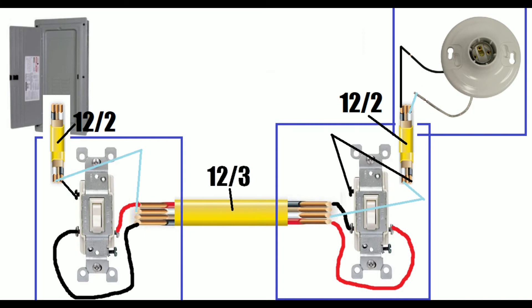The neutrals do not connect to any portion of the switch. They just go inside the box, connect to each other, and continue the neutral path from box to box until it gets to the light. They are shown in light blue right here.